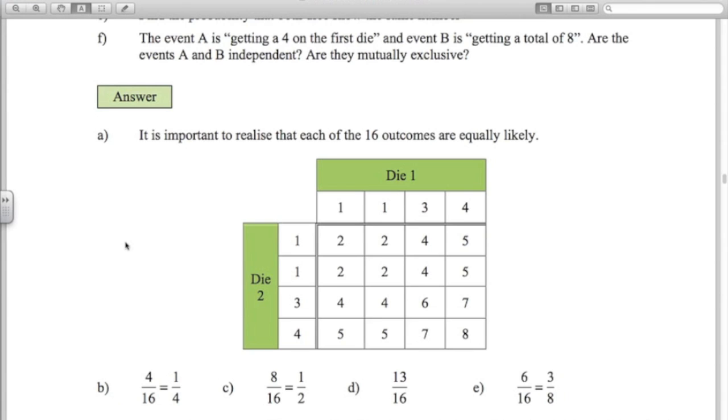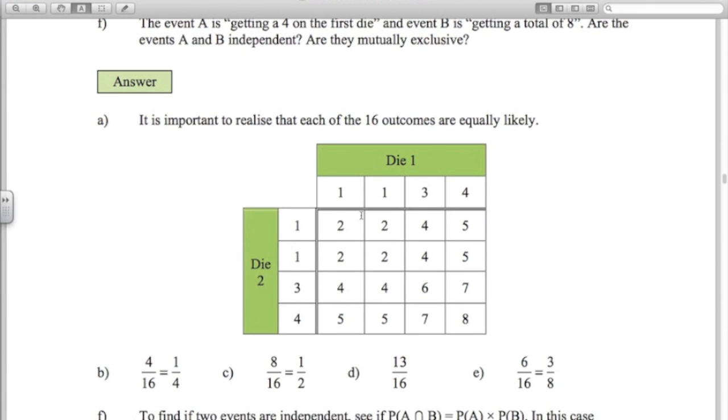And in E, both dice show the same number. So we need to look a little bit closer here. Certainly 1, 1 here, 1, 1 here. All of these four here are going to show the same number. 3 and 3 here. 4 and 4 here. So if we count them all up, it looks like we've got 6 out of the 16 showing the same number. So 3 8ths. You can write these as decimals, but I think it's nicer here to just write it as a fraction and leave your answer as a fraction.